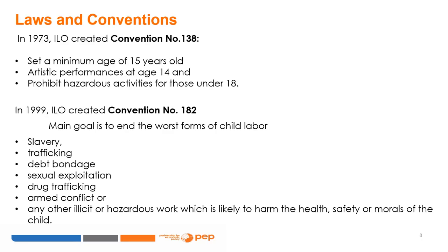In 1973, the ILO, in trying to reduce child labour, created Convention No. 138, requiring countries to set a minimum age of 15 years old under which no one should work or be employed, except for light work and artistic performances at age 14, and prohibiting hazardous activities for those under 18. To date, 173 countries have ratified this convention.